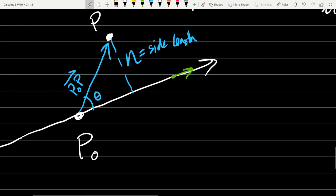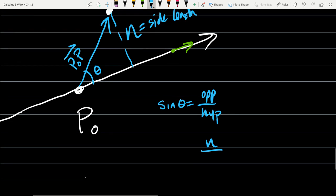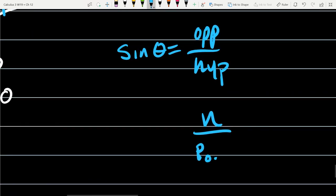Let's write that down now. Sine, so opposite over hypotenuse. Opposite is going to be N, the length of the side. Hypotenuse is not just P₀P, that's the vector going that direction. That will be the magnitude of that vector, and that is sine theta.